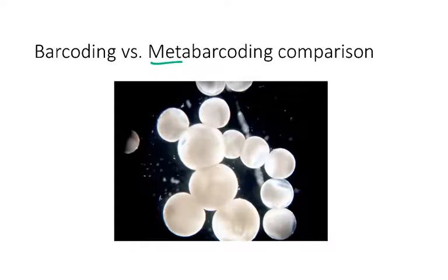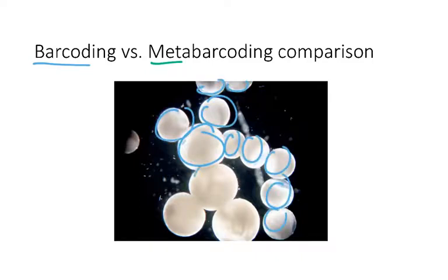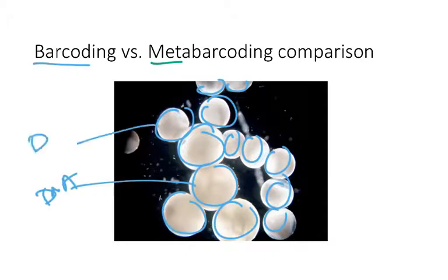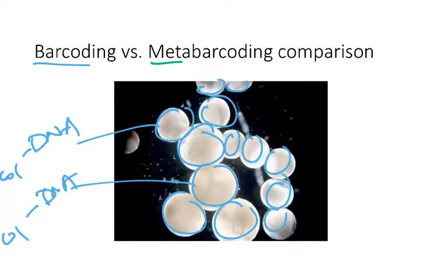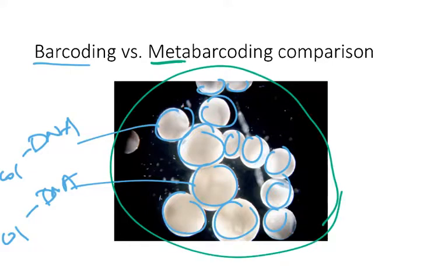If we were to use a barcoding approach, what you would need to do is isolate DNA separately from each one of these fish eggs, and then do PCR to obtain your CO1 sequence. With barcoding, you have to do each individual separately. With metabarcoding, what's so great is you can just take this whole sample of fish eggs.